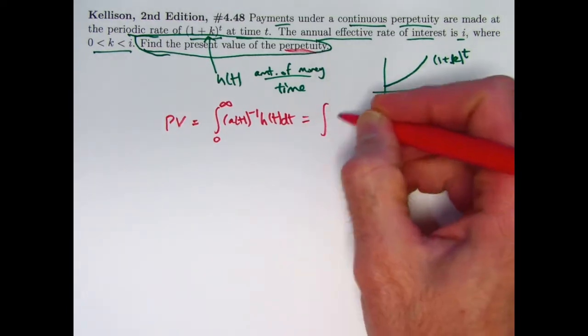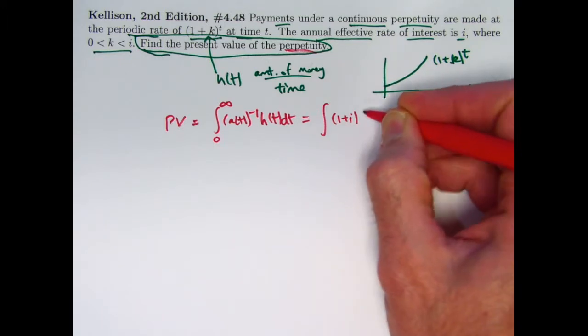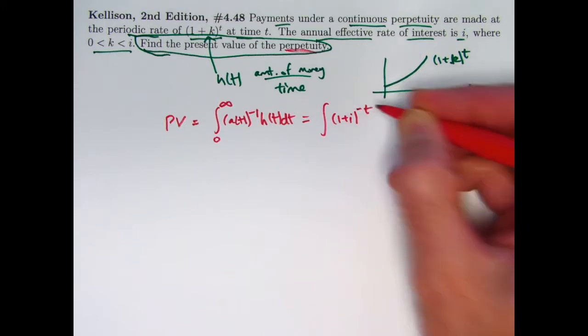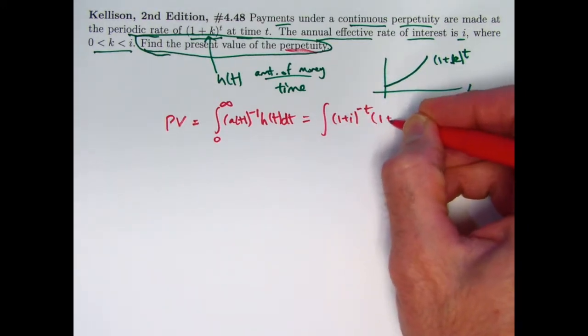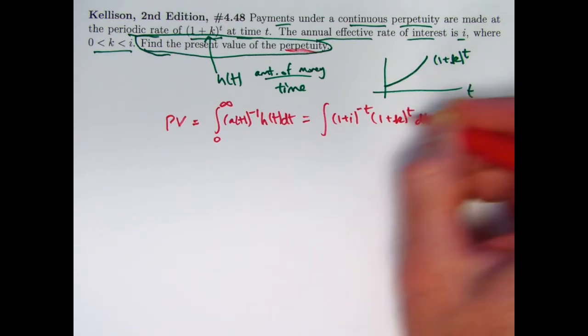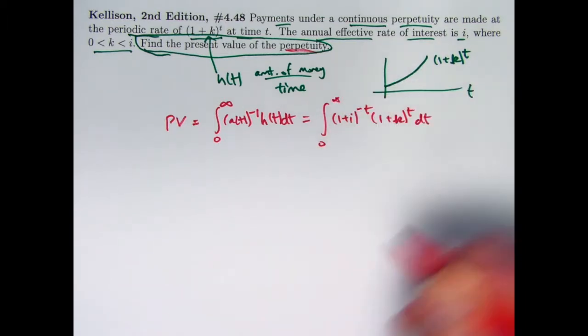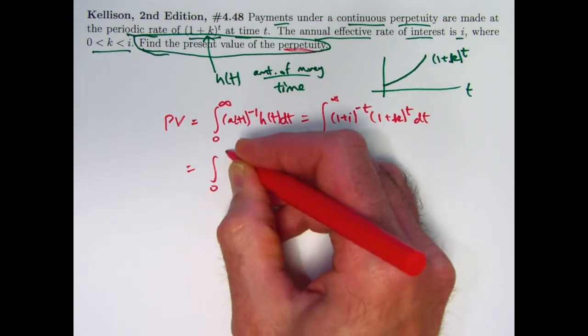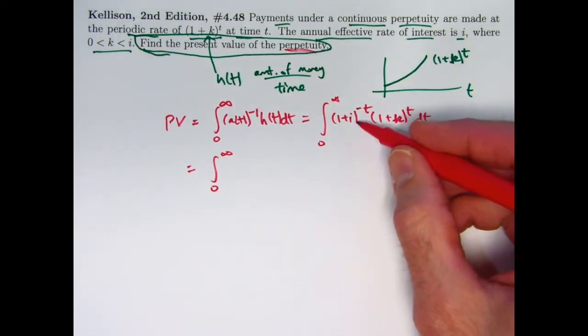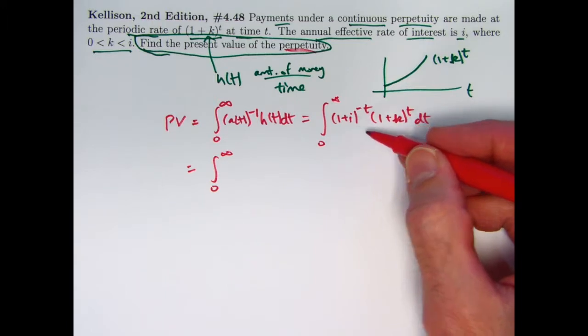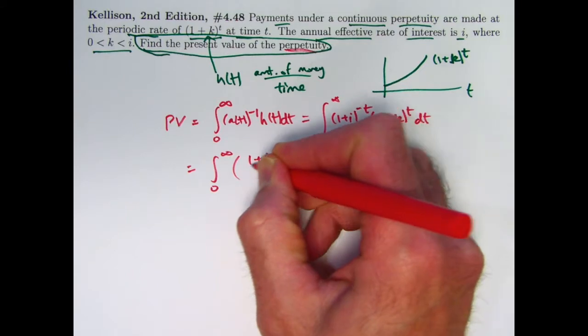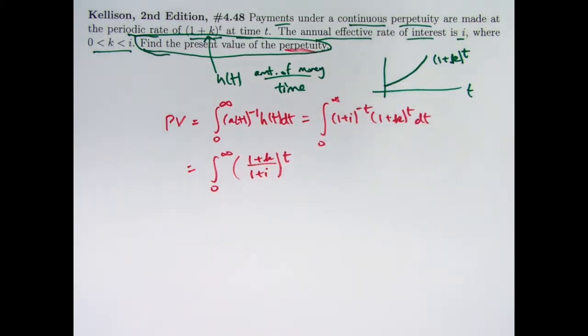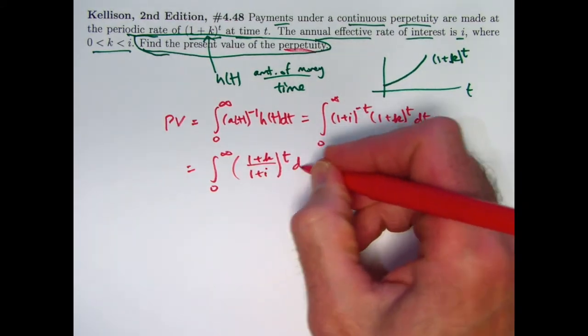a of t is going to be 1 plus i to the t. So a of t to the negative 1 power will be 1 plus i to the negative t power, or v to the t power if you prefer. And h of t is 1 plus k to the t. We evaluate from 0 to infinity. This is the same thing as 1 over 1 plus i to the t power. We can combine these two things as 1 plus k over 1 plus i to the t power. And this is the integral that needs to be done.